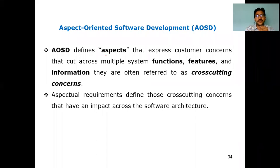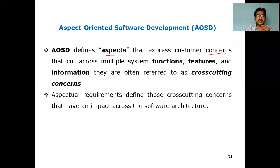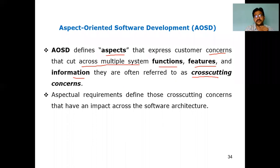AOSD defines aspects — it deals with specifics that express customer concerns. Customer concerns are nothing but customer requirements that cut across multiple systems. What AOSD does is express the customer concerns and cut across multiple systems as functions, features, and information. This is all referred to as cross-cutting concerns.